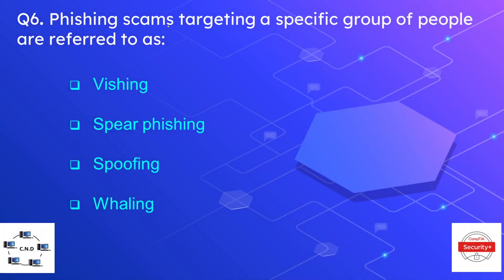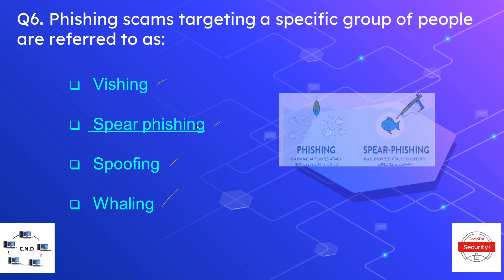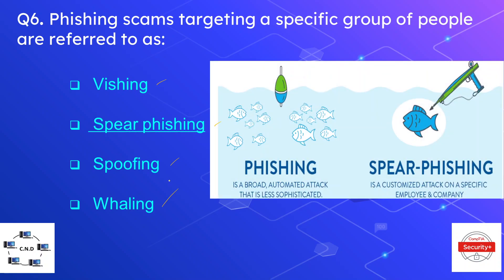Question number six: phishing scams targeting a specific group of people are referred to as — the options are vishing, spear phishing, spoofing, and whaling. The correct answer is spear phishing. Spear phishing is a technique of phishing that targets a specific group of people, as opposed to generic phishing which targets a broad audience.